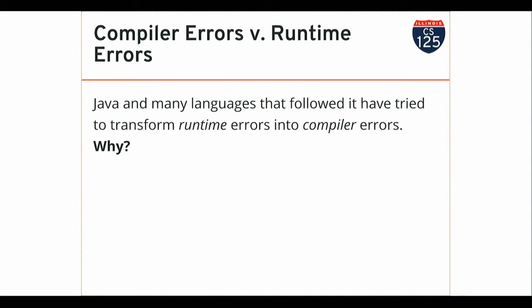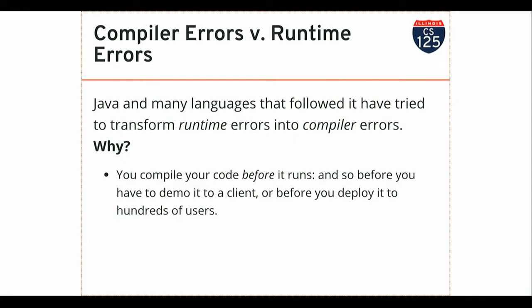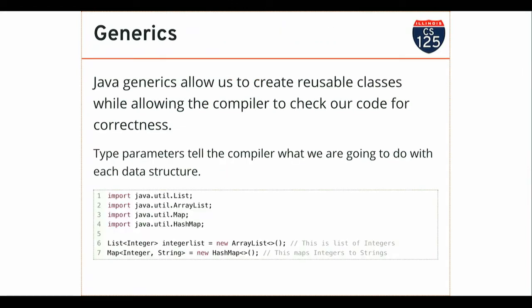What we'd like to be able to do is allow the compiler to help us. We want to tell the compiler what type of things we're going to put in the list or the map. This allows the compiler to check that when we get something out of the list, we're using it correctly. You can use bare lists in Java because before Java 5 this feature wasn't part of the language, so there's legacy code that still uses bare lists and maps — but you should never do this.